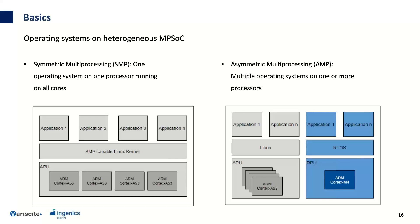There are two software variants for MPSoC: symmetric multi-processing (SMP), where one operating system runs on all cores of one processor — for example Linux running on all cores of a Cortex-A53, with multiple applications in user space; and asymmetric multi-processing (AMP), where multiple operating systems run on one or more processors — for example Linux on the Cortex-A53 and FreeRTOS or bare metal on the Cortex-M4.